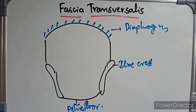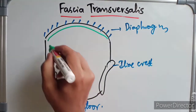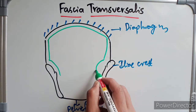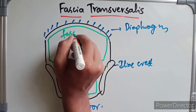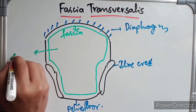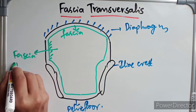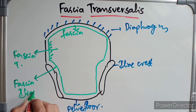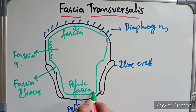What happens is this is the diaphragmatic fascia which lines below the diaphragm. To the abdominal wall it forms the fascia transversalis, here it forms the fascia iliaca, and in the pelvis it forms the pelvic fascia. This is how the fascia lines the inner lining of the abdominal cavity.